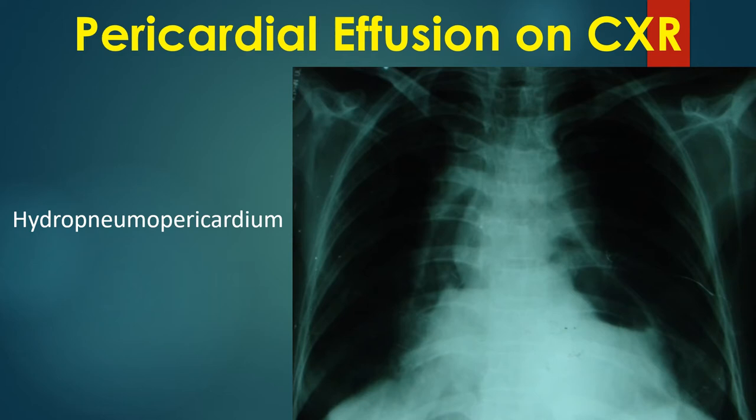Hydropneumopericardium can occur if an esophageal malignancy invades the pericardial cavity and produces an esophageal-pericardial fistula. In such a case, hydropneumopericardium is rapidly converted into a pyopneumopericardium.